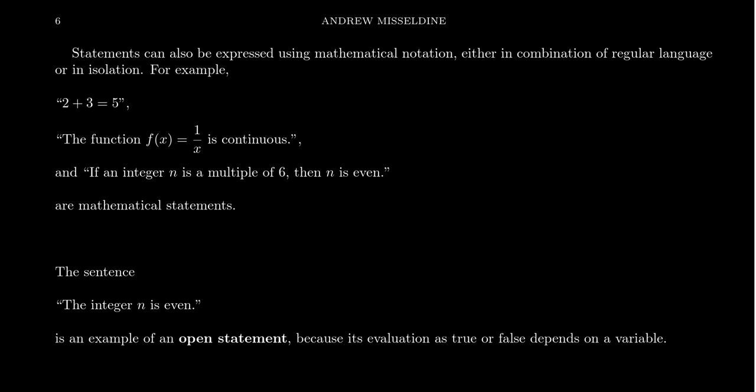I should mention that this next example here—the integer n is even—is an example we call an open statement. It's an open statement because it contains variables, and dependent upon how you choose those variables will change whether it's true or false. In this situation, you have this unspecified integer n. n could be even, but n could be odd. I don't know without more information about n. So in this open statement, it is a statement, but you do need further information before you can decide whether it's true or false. We use those in mathematics all the time.